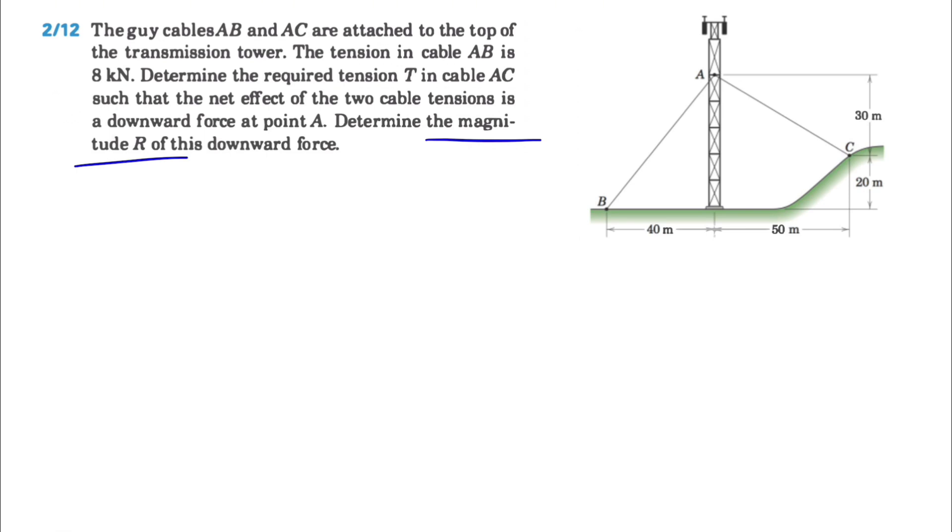We have two different tensions, TAB and TAC, which each has both X and Y components. This will be the X component for AB and this will be the Y component. We can call this angle here alpha.